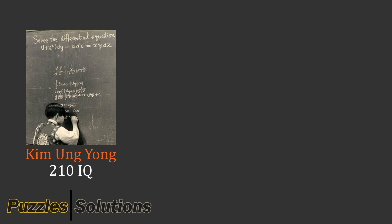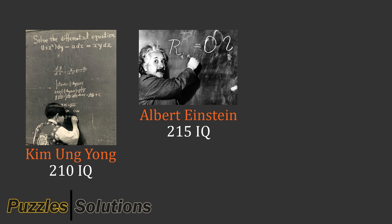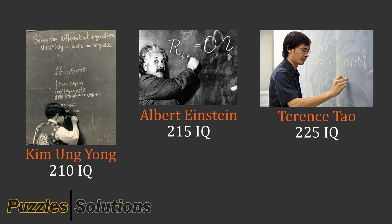With a quick round of googling, I found these three claims: Kim Aung Young with 210 IQ, Albert Einstein with 215 IQ, and Terence Tao with 225 IQ. These are just three people out of many that people claim to have over 200 IQ.